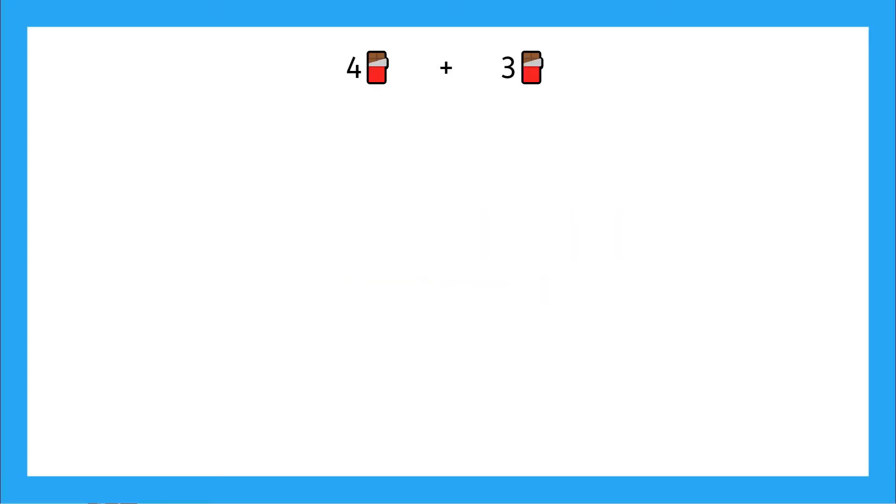So here I have a funny looking expression that says four chocolates plus three chocolates, and we need to simplify this expression. So what is this expression really saying? It's saying we have four chocolates, and that looks like a chocolate plus a chocolate plus a chocolate plus a chocolate. And then we're adding three more chocolates, right?